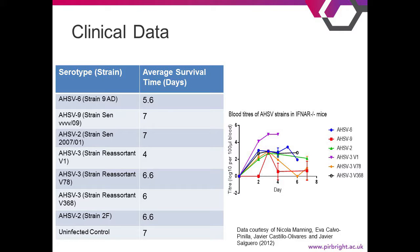Looking at the clinical data to contextualise the experiment: AHSV-3 v1 was the most pathogenic strain — hosts infected with it had the shortest survival time of only four days. The other AHSV-3 reassortants were also quite pathogenic with survival times of six and 6.6 days. AHSV-6 was also pathogenic, but the AHSV-9 VVV-09 Senegal strain and the Senegal 2007 AHSV-2 strain were less pathogenic — those mice survived to the end of the experiment. Looking at the blood titers, AHSV-3 clearly had the highest titer over the course of infection. AHSV-6 was somewhere in the middle, and AHSV-9 had one of the lowest mortalities and also the lowest viremia.